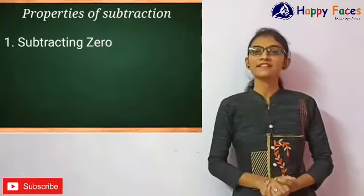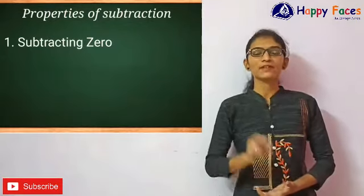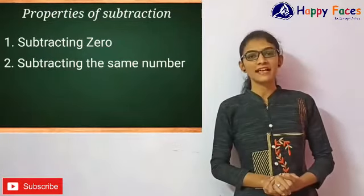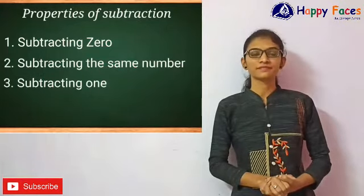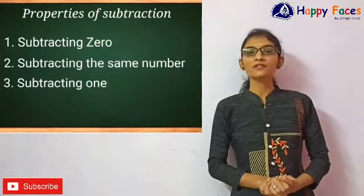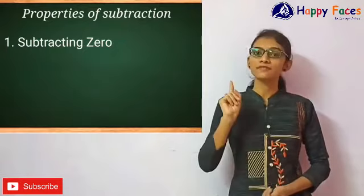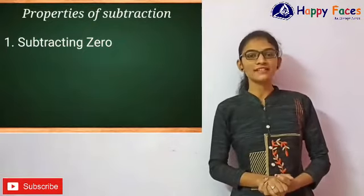First one is subtracting 0. Second one is subtracting the same number. Third one is subtracting 1. In the last video, we already saw first property, that is subtracting 0.